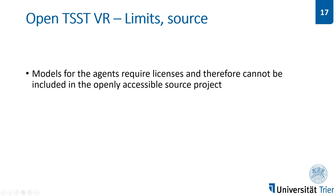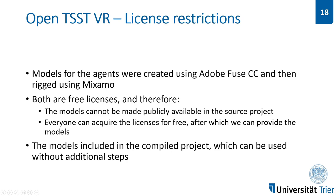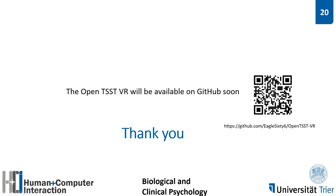Unfortunately, we are slightly limited in openly distributing the source project, as the models for the agents we use require licenses. Therefore, we cannot include those in an openly accessible source project. The models were created using Adobe Fuse CC and then rigged using Mixamo. Both require free licenses, which means we cannot distribute them openly. However, anyone can acquire the licenses for free, after which we can provide the models. The compiled project has all the models included and can be used without additional steps. The project will be published on GitHub after it has been validated. A link and QR code to the future project is displayed on the right side. Thank you for watching!